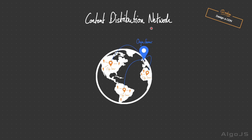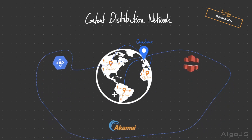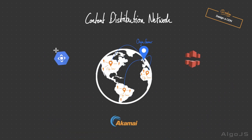Welcome back. Today we're going to be designing a content distribution network, commonly referred to as a CDN. Some very popular CDNs include Google Cloud CDN, CloudFront as part of AWS, and Akamai.